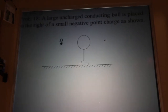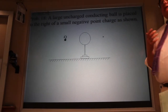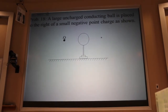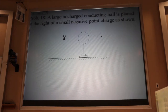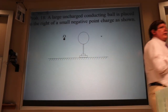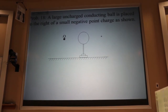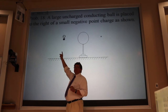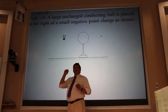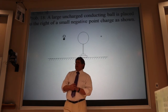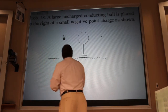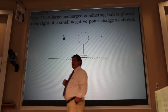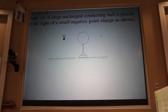I usually don't work a problem you just turned in, but this one is nearly identical to the last page of your tutorial homework due tomorrow at 5 o'clock—a very important homework problem. Problem 18 has a negative point source nailed in place, and asks what happens to the field at X when a large neutral metal ball is placed between the source and X.